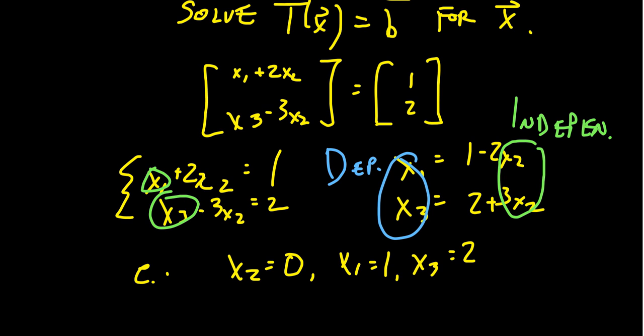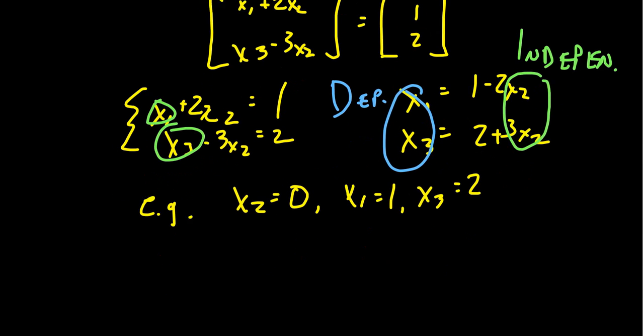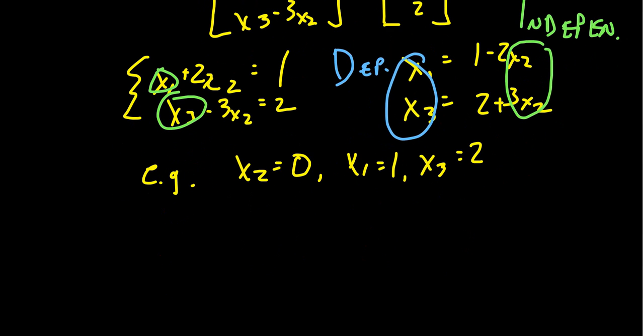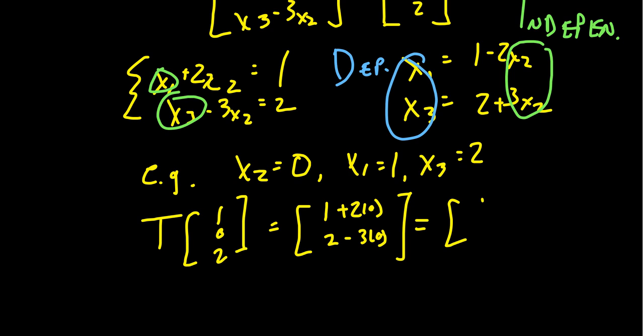All right, this is just a specific example. But let's look what happens to the transformation when you do that. T(1, 0, 2), by the formula you get, you're going to get 1 + 2 times 0 and 2 - 3 times 0, like so. And oh yeah, you just get (1, 2) again. That's great.